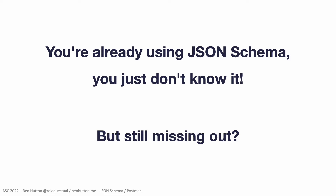JSON Schema is designed to be used for the validation of JSON data, but it can be used to generate forms or even code in the form of classes or types. If you're using or writing OpenAPI or AsyncAPI specification documents, those have embedded JSON Schemas.